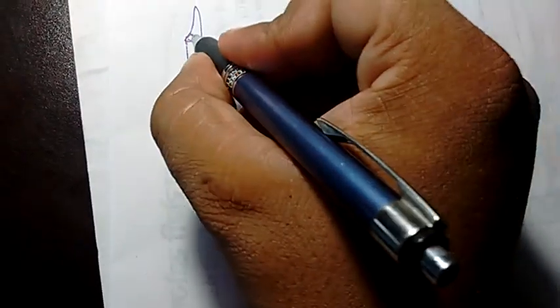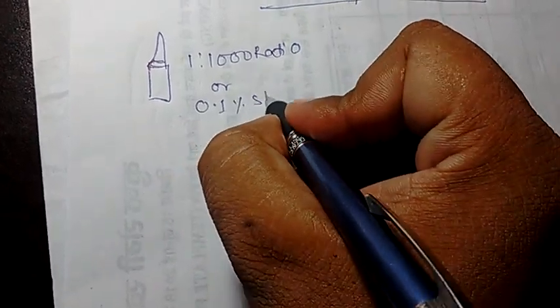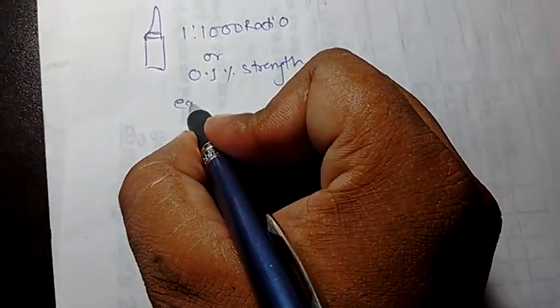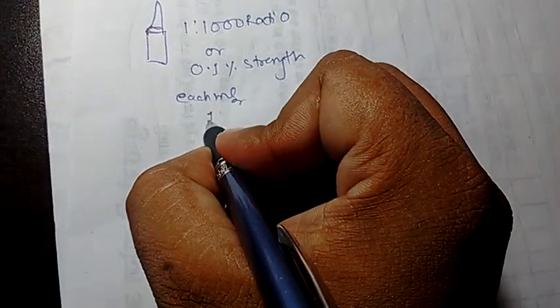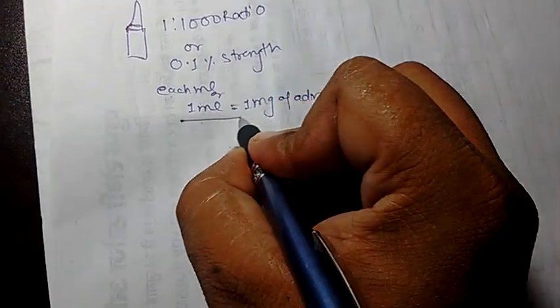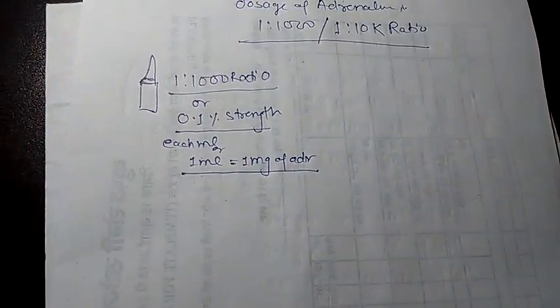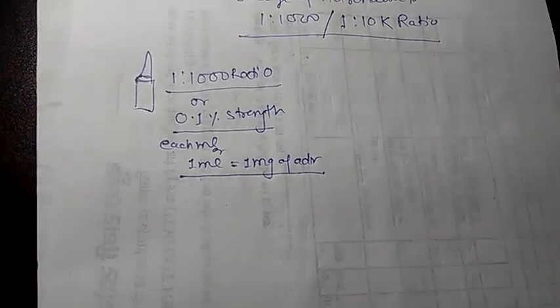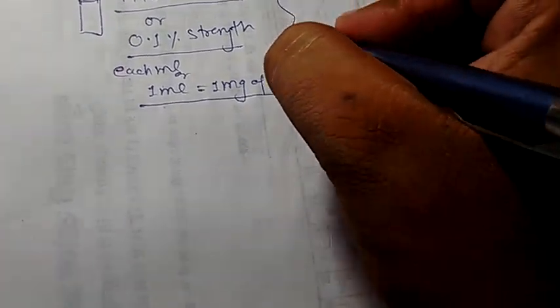Normally the Adrenaline ampoule is 1:1000 ratio and 0.1% strength, in which each ml of solution contains 1 mg of Adrenaline. There are 3 things you have to understand: 1:1000 ratio, 0.1% strength, and 1 ml contains 1 mg of Adrenaline. I am going to explain these 3 things very easily.